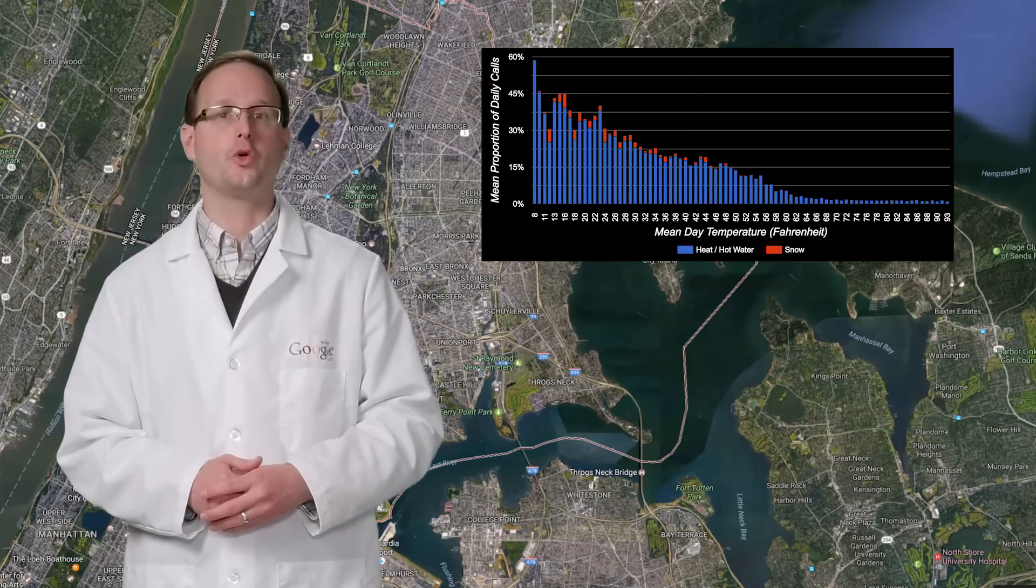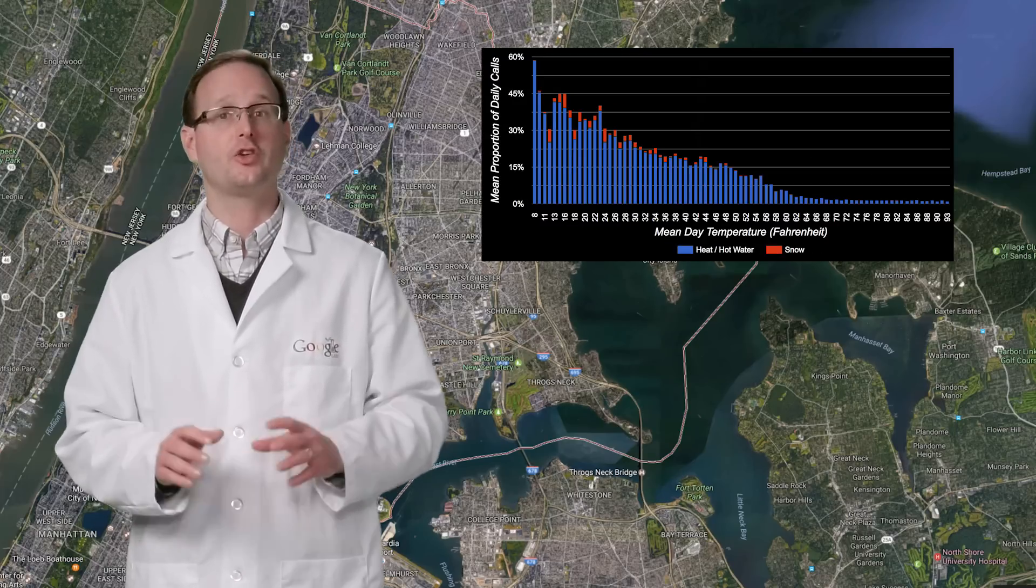When the temperature in New York drops, New Yorkers retreat inside and call 3-1-1 about the snow or lack of heat and hot water, especially in the Bronx.